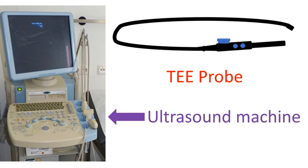In addition to a routine echocardiogram done from the chest, a special echocardiogram known as transesophageal echocardiogram (TEE) is used to assess the finer details of the ASD. TEE is done using a probe introduced into the food pipe just behind the heart. The exact location of the defect and its distance from other important parts of the heart, like heart walls and the aorta, are measured. The aorta is the largest blood vessel in the body carrying oxygenated blood.